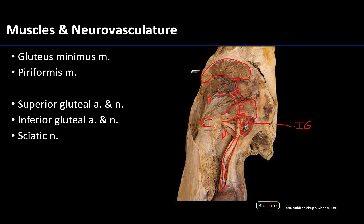It makes sense that the inferior gluteal bundle has been cut here because the gluteus maximus was removed in the deep dissection, but it is important to note that the inferior gluteal structures are inferior to the piriformis. There are other neurovascular structures exiting the greater sciatic foramen inferior to the piriformis, such as the pudendal nerve and internal pudendal artery, but you do not need to identify them in this location — just note that you may see other neurovascular structures there as well.